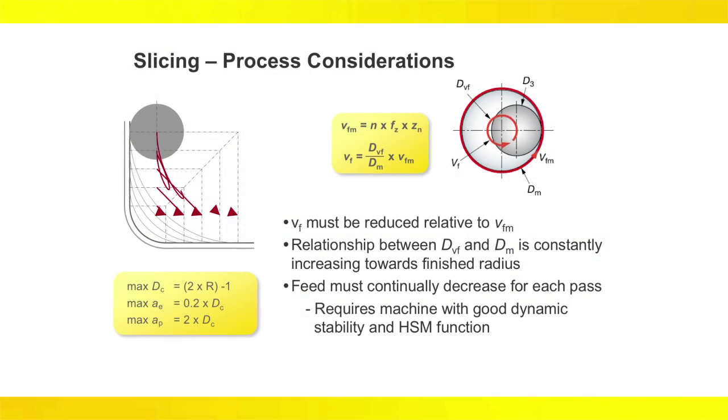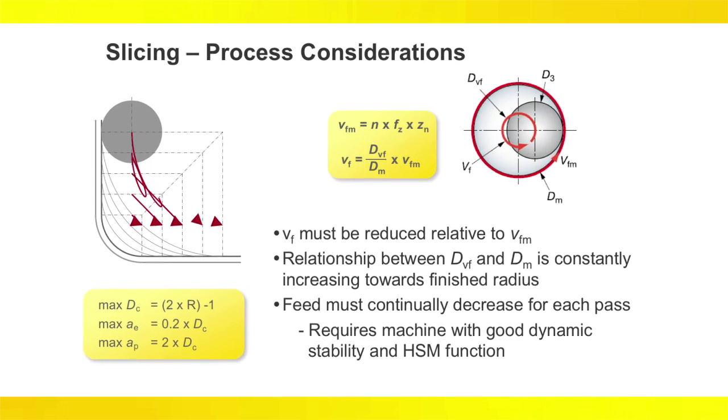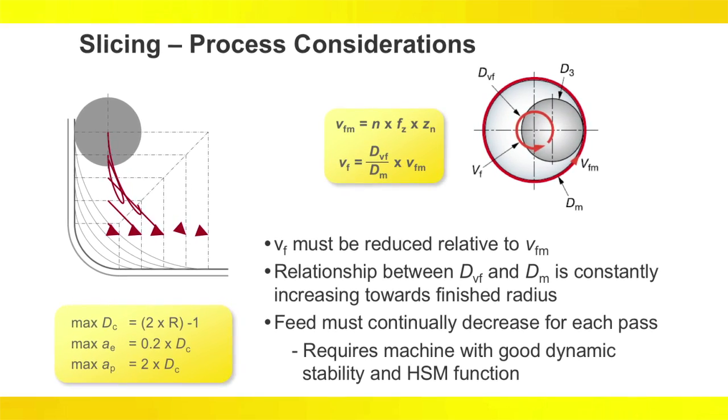Slicing Corners also takes into account centerline feed rate and periphery feed rate, and how the speed rate needs to be reduced as each successive slice is taken to maintain surface speed.